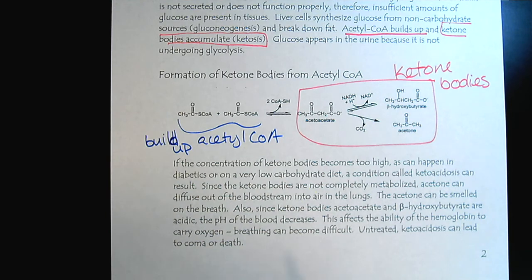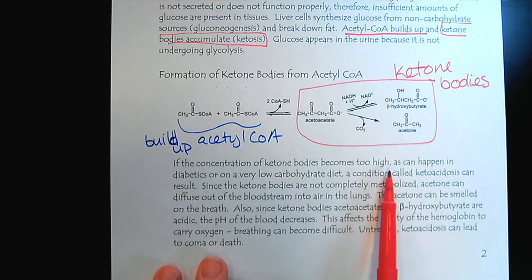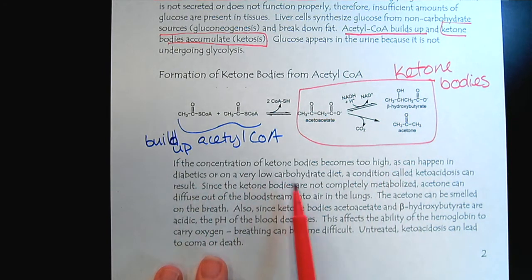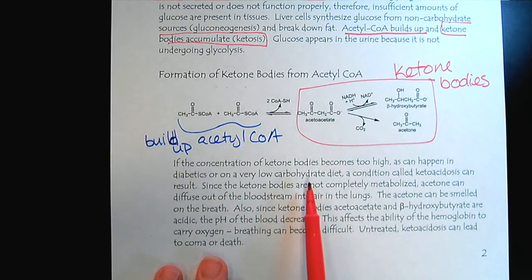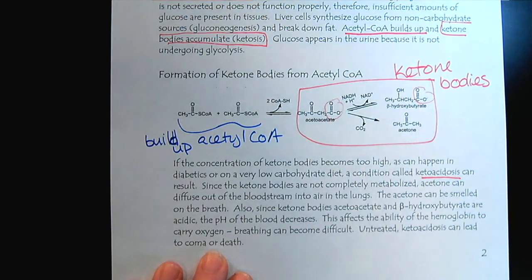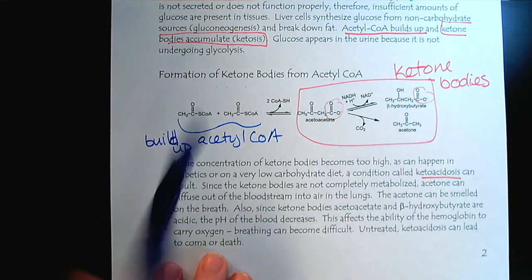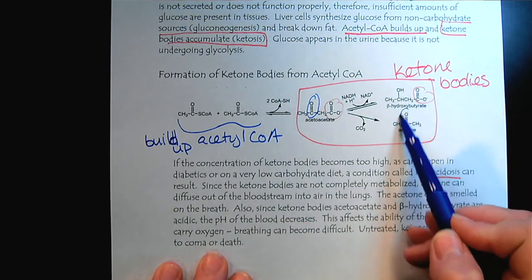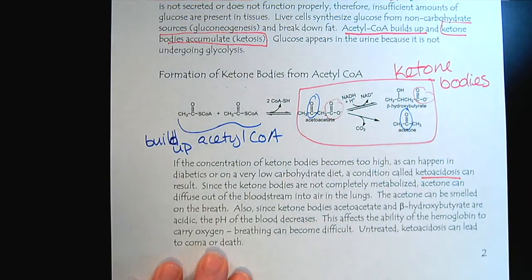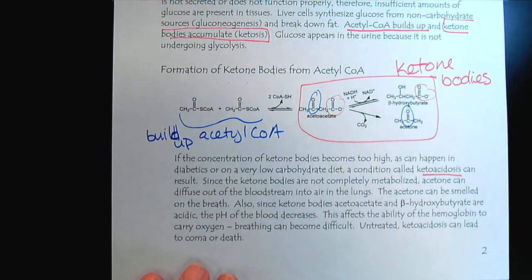In the short term, ketone bodies are an emergency energy source. But long term, if the concentration of ketone bodies becomes too high — which can happen from diabetes or a very low carbohydrate diet — it creates ketoacidosis. We can see there are many acidic groups, and we can see the ketones, which is why they're called ketone bodies. We recognize the acidity with those carboxylic acid groups.